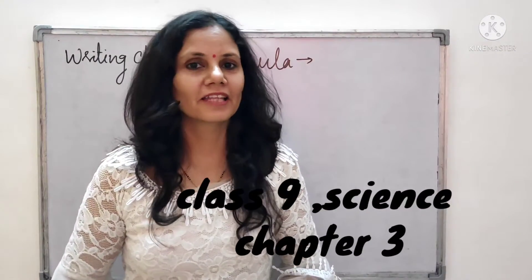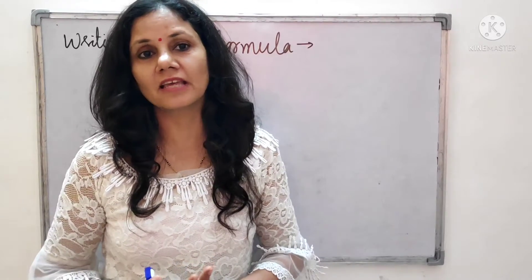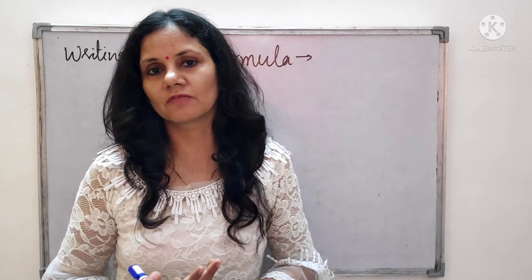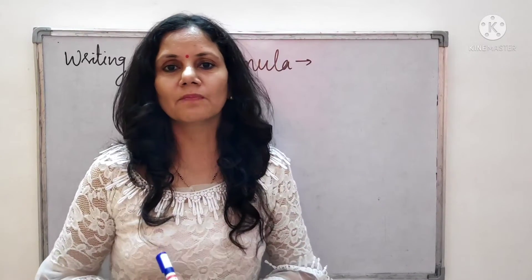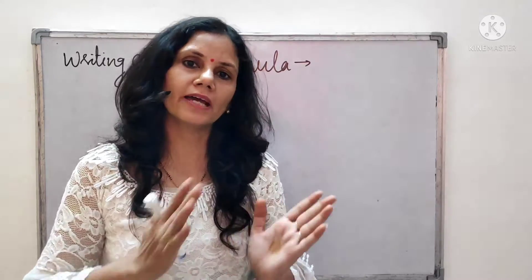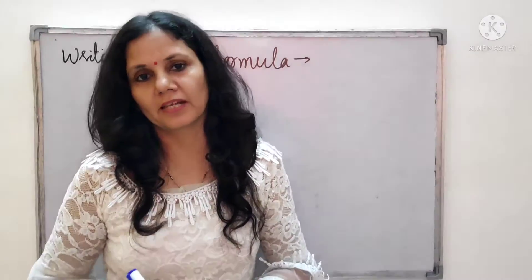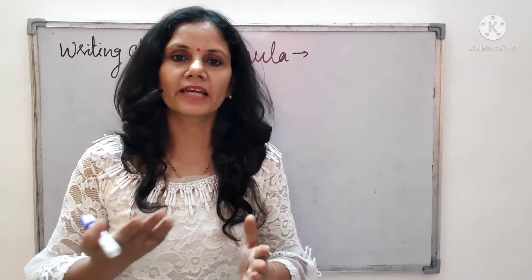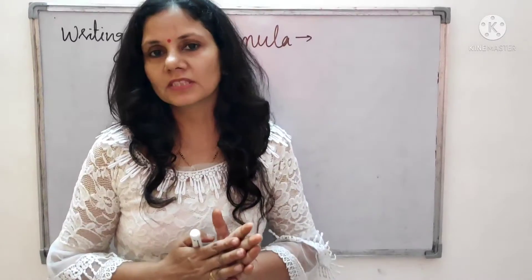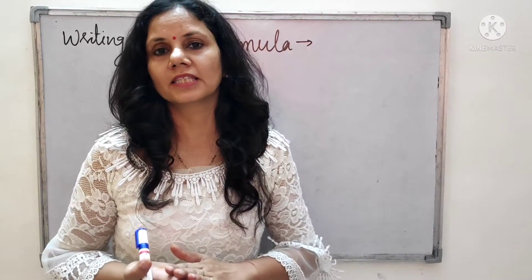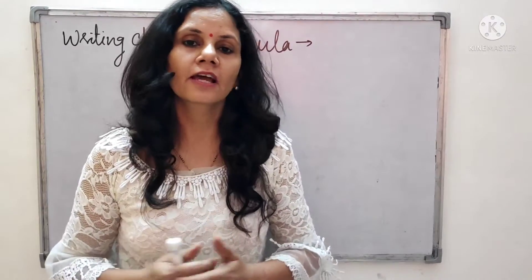Hello students, welcome back to my channel. In the previous video we discussed about different ions, atoms, and molecules. Today we are discussing how to write the chemical formula. We have a lot of examples of cations and anions. Cations carry a positive charge and anions carry a negative charge. When positive and negative charges attract, they create ionic compounds.